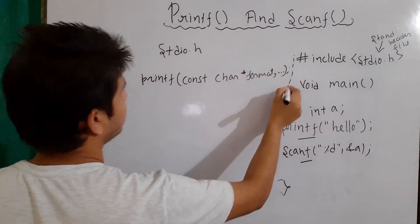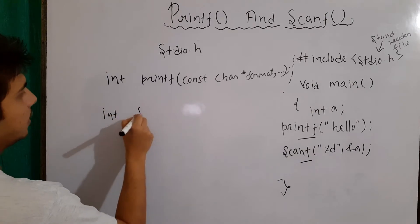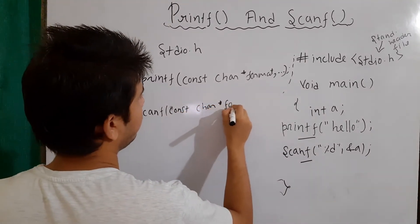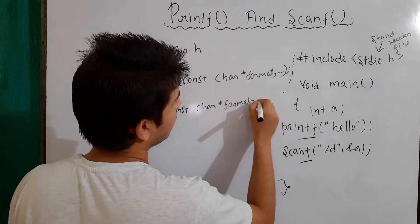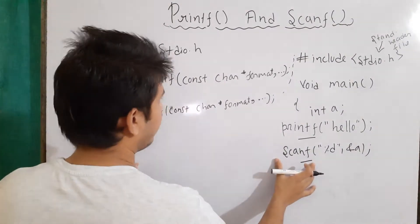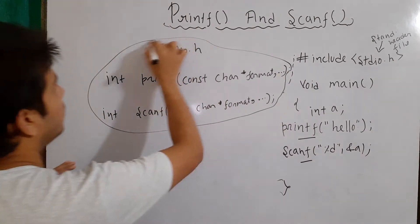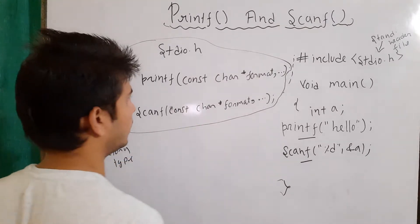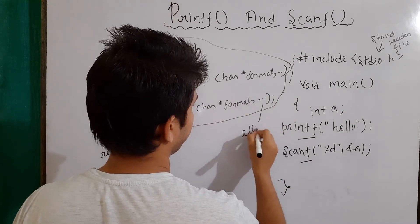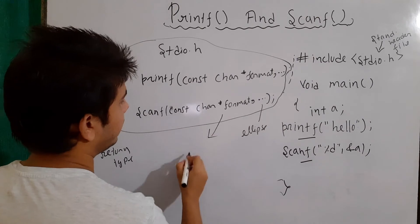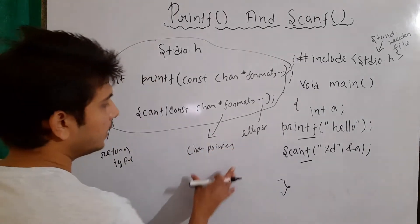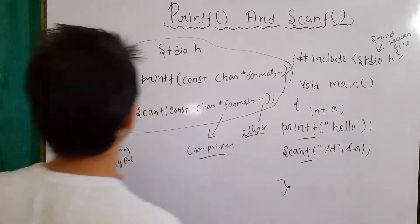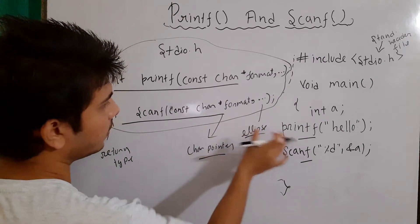The prototype for scanf is: int scanf(...), also defined in stdio.h. The return type of both functions is integer. The triple dot here is an ellipsis and the other parameter is a character pointer. These are some advanced features we will talk about in other videos, but these two are the prototypes for the printf and scanf functions.